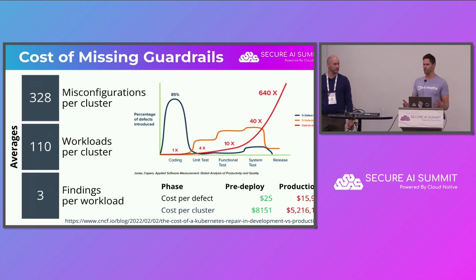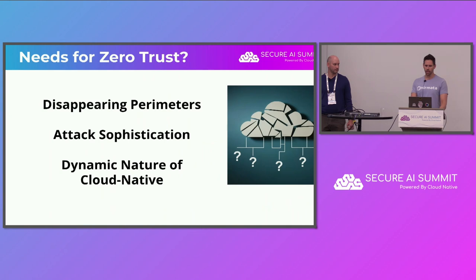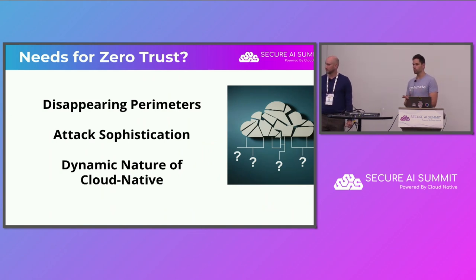Defects are never going to be eliminated. I don't think we'll see a world where bugs don't happen or where somebody doesn't add a period or dot where they shouldn't and cause some outage. But how do we work towards reducing them? This is where concepts like zero trust start coming into the picture.